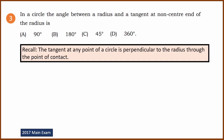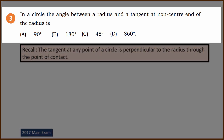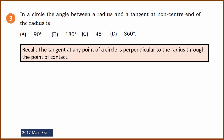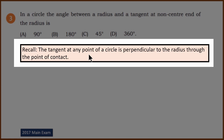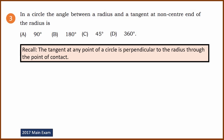Third question — angle between radius and tangent. In a circle, the angle between a radius and a tangent at the non-center end of the radius is what? The answer is 90 degrees, because the tangent at any point of a circle is perpendicular to the radius through the point of contact. That angle is 90 degrees, so the answer is A.